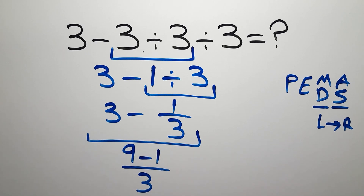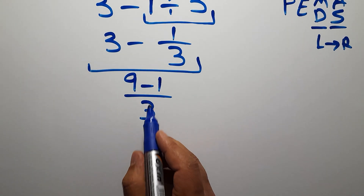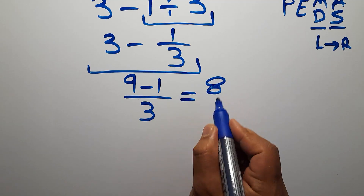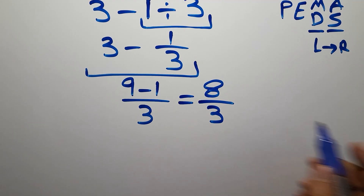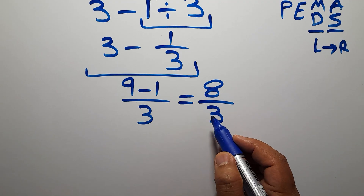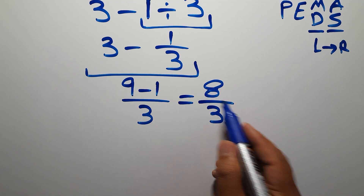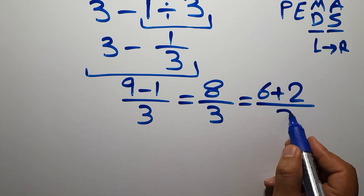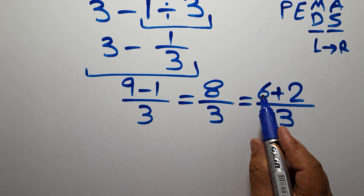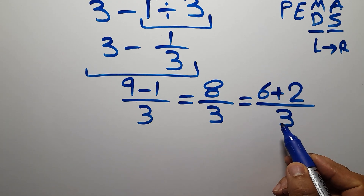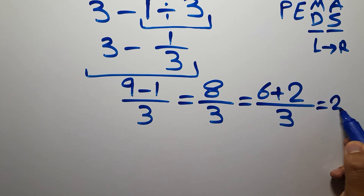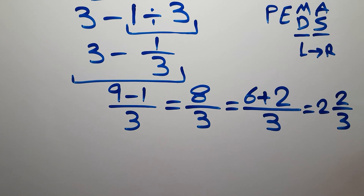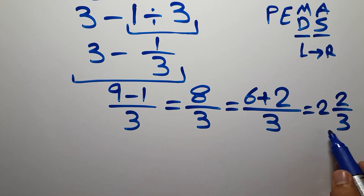3 times 3 gives us 9, so we have 9 minus 1 over 3. 9 minus 1 gives us 8, so the result is 8 over 3. Converting this improper fraction to a mixed number: 8 can be written as 6 plus 2, and 6 divided by 3 gives us 2, so we get 2 and 2/3. This is our final answer.